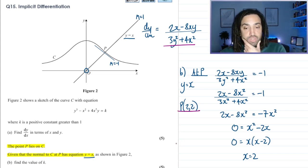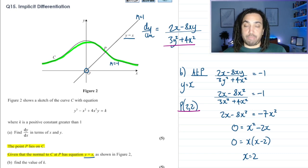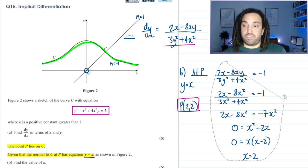Great. Now how does that help us find k? Well, what we know is the curve, which is c, we know it passes through p, so we know that (2, 2) satisfies the equation of the curve. So I just need to sub in to the curve now to find the value of k.